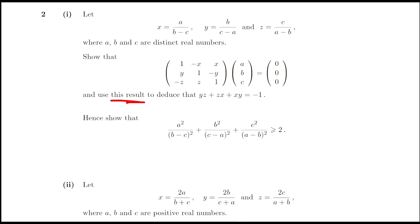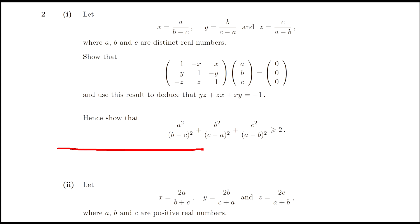And use this result to deduce that yz plus zx plus xy is equal to minus 1. Hence, show that the inequality a² over (b minus c)² plus b² over (c minus a)² plus c² over (a minus b)² is greater than or equal to 2. Let us solve the problem up to here, then come back and read the second part.